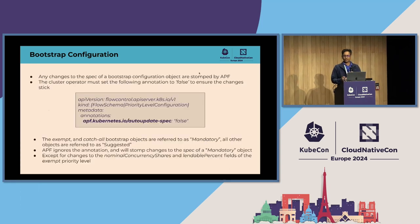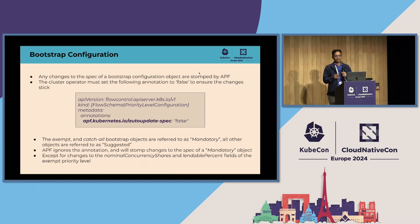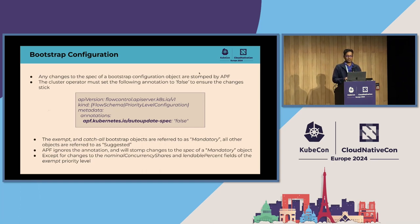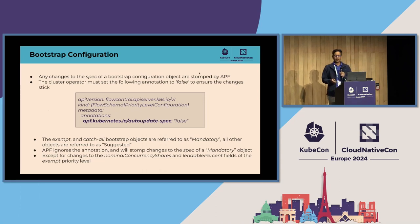During startup, the kube-apiserver ensures that all bootstrap configuration objects exist on the cluster. It also periodically scans these objects and applies any necessary updates. That means any changes to the spec of a configuration object will be overwritten by the API server. For changes to stick, cluster operators must set the auto-update spec annotation to false. The goal is to enable the kube-apiserver to update bootstrap objects installed by previous releases, while not overriding changes made by cluster operators.